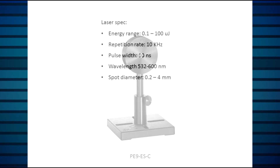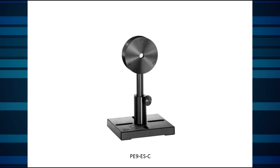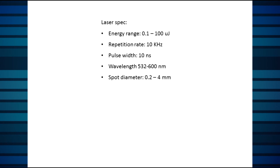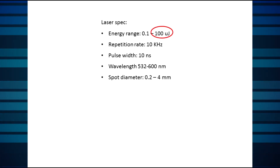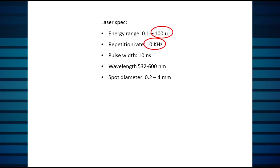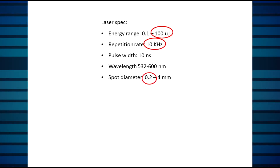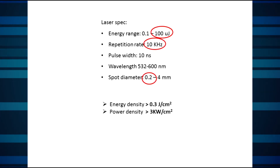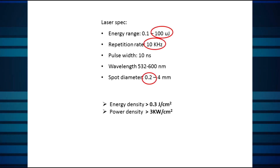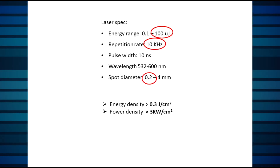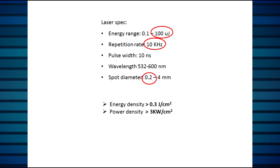For this energy range, we have an energy sensor called the PE9ESC. But hang on — combining the worst-case numbers: energy 100 microjoules, pulse rate 10 kHz, and 0.2 mm spot diameter, we find an energy density somewhat over 300 mJ per square centimeter. That's reasonable. But power density is over 3 kW per square centimeter, which will clearly have to be reduced.